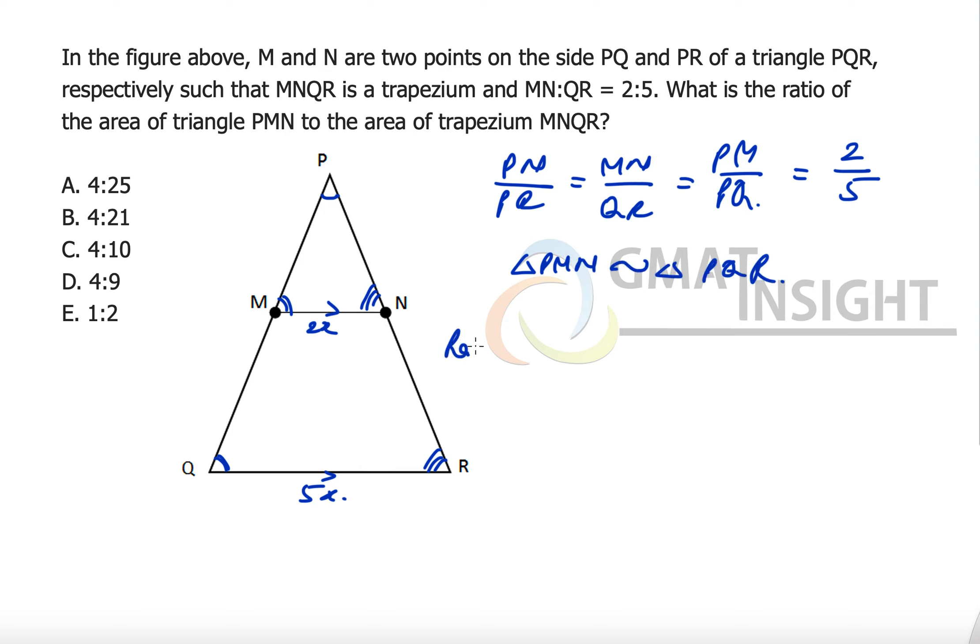The ratio of areas is given by we write it as A1 over A2 that is equal to ratio of corresponding side and the square of it where ratio of corresponding sides is what we have written here.